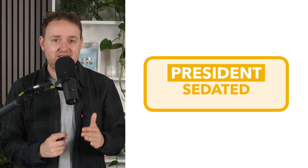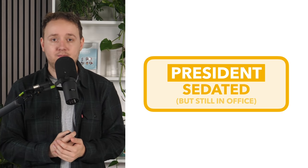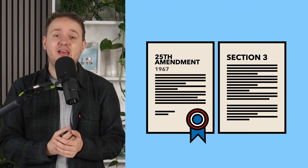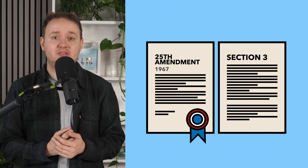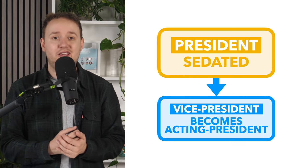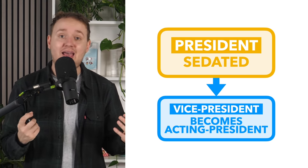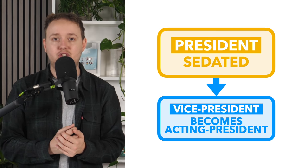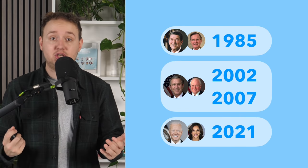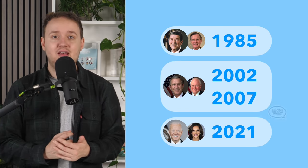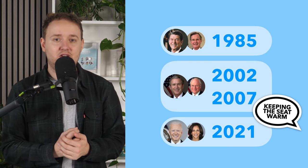What happens if the president has to be put under sedation or anesthesia for a medical procedure? Well, they obviously don't have to officially leave office, but under Section 3 of the 25th Amendment, the president in that scenario yields their power to the vice president, who is then the acting president until the actual president has regained consciousness. This has happened four times in American history, mostly for colonoscopies. However, on all four occasions, the acting president did nothing of significance.